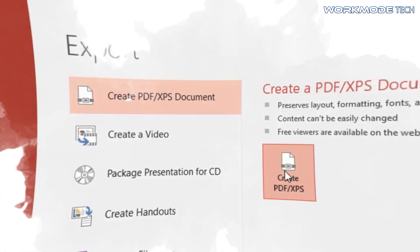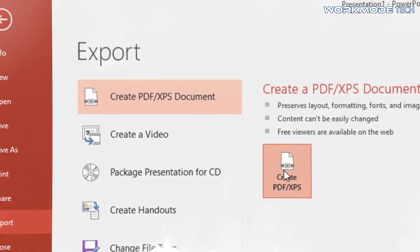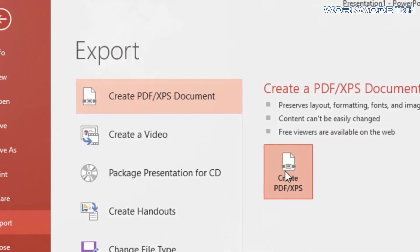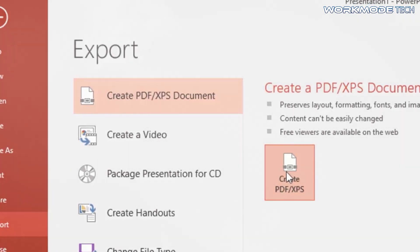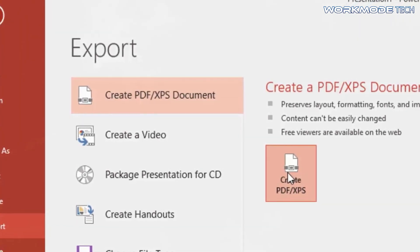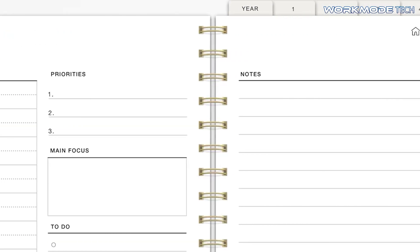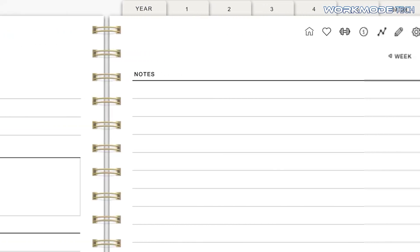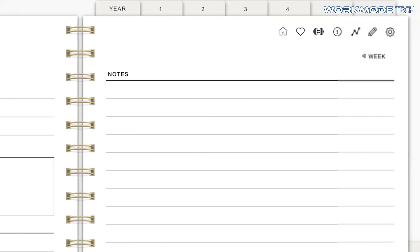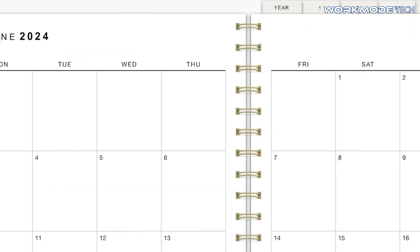Once all your links are in place, go to File, Export As, and choose PDF. Make sure the option to include hyperlinks is checked. This will generate your final interactive PDF file, ready for testing.